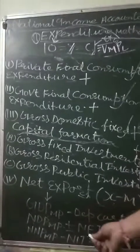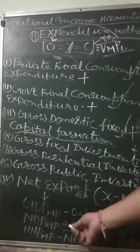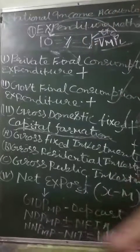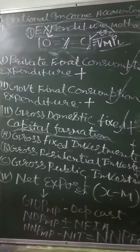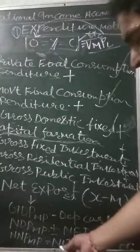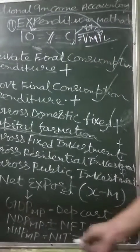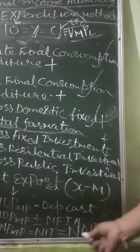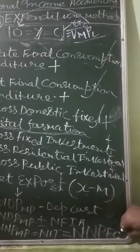From GDP at MP, once we apply net factor income from abroad (NFIA), which can be positive or negative, we get NNP at MP — net national product at market price. Then, from NNP at MP, when we deduct NIT (net indirect tax), we arrive at NNP at FC — net national product at factor cost.